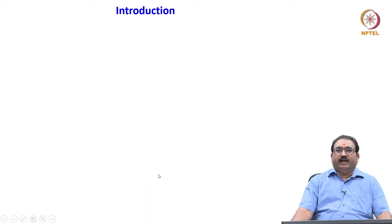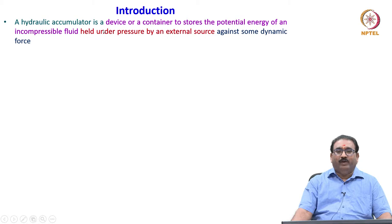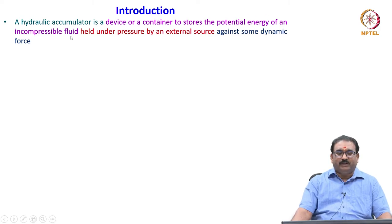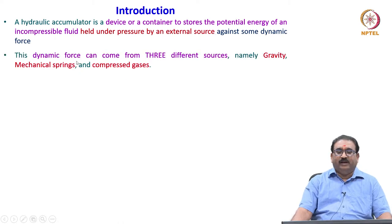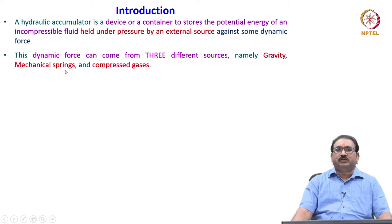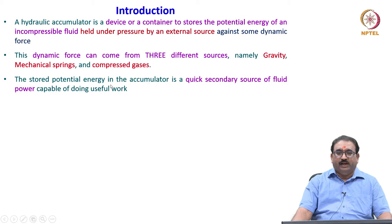Let us move on to the introduction. A hydraulic accumulator is a device or container that stores the potential energy of an incompressible fluid held under pressure by an external source against some dynamic force. The dynamic force can come from three different sources, namely gravity, mechanical springs, and compressed gases. The stored potential energy in the accumulator is a quick secondary source of fluid power capable of doing useful work.